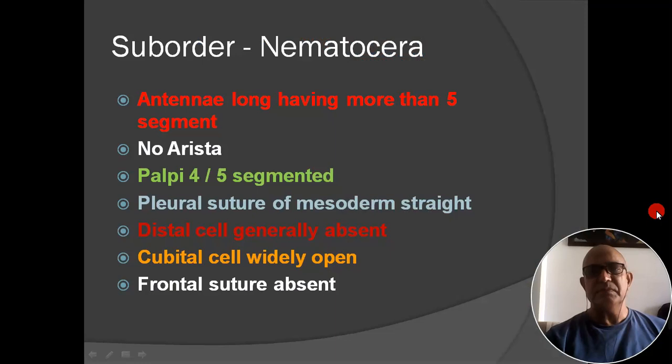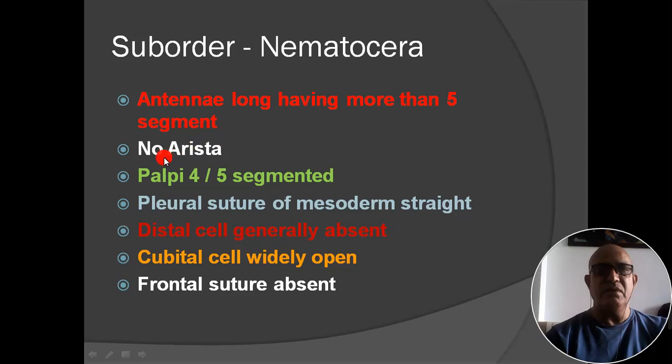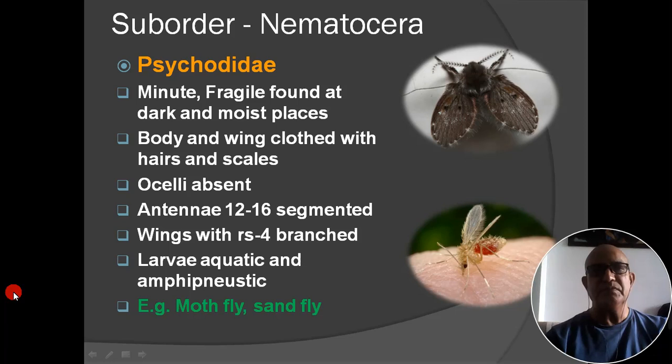Suborder first: Nematocera. Main characters: antenna long, having more than five segments; arista absent; palpi 4-segmented; pleural suture of mesothorax is straight; distal cell generally absent; cubital cell widely opened; frontal suture absent.